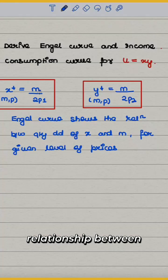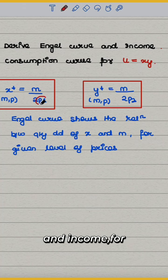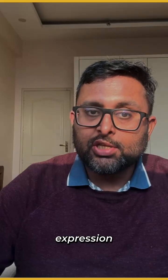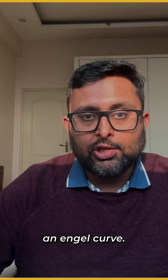This is telling you the relationship between the demand for x and income for given level of price. This is telling you the relationship between demand for y and income for given level of price. So this expression itself is also an Engel curve.